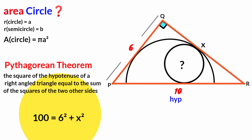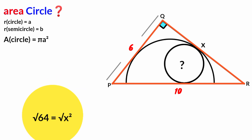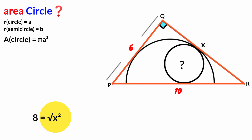By Pythagoras: 10² = 6² + x². 10 squared is 100, 6 squared is 36, so 100 = 36 + x². Bringing 36 to the left: 100 − 36 = 64. Taking the square root of both sides: √64 = 8, and √(x²) = x, so x = 8. The length of this side is 8 units.